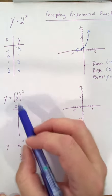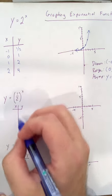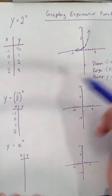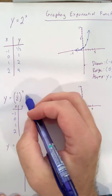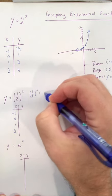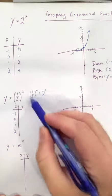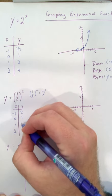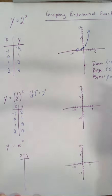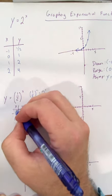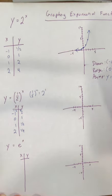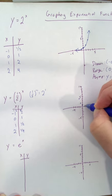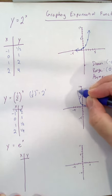Moving on to y equals one half to the x. So this one, the base is less than one. Let's see what happens. Negative one, zero, one, and two. When we plug in negative one this time, we would get one half to the negative one is the same as two to the positive one. Flip the fraction and make that positive. So this actually goes to two. Anything to the zero is one. One half to the one is one half and one fourth. So we might want to sneak in an extra point of negative two, four here to get a better sense of what this graph looks like. Negative two, four. Negative one, two. And it looks like this.